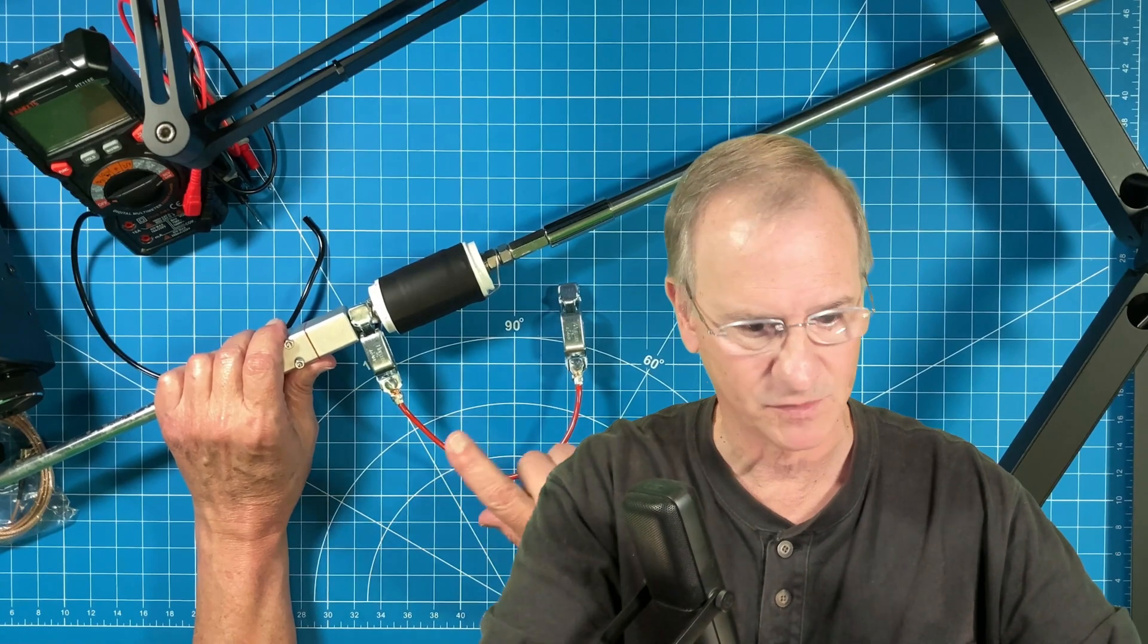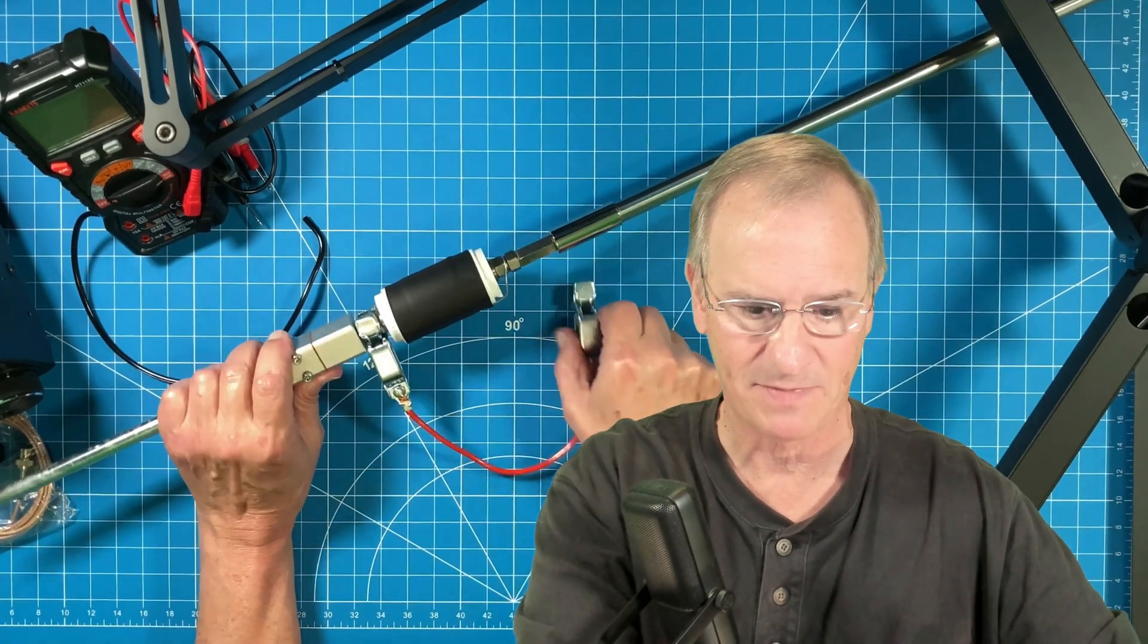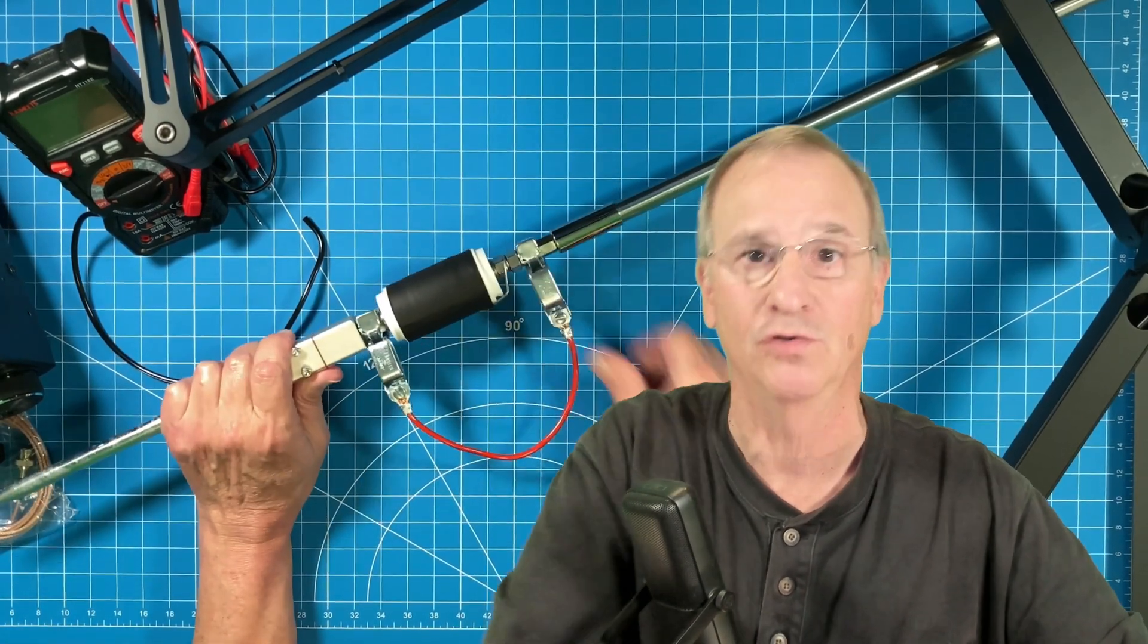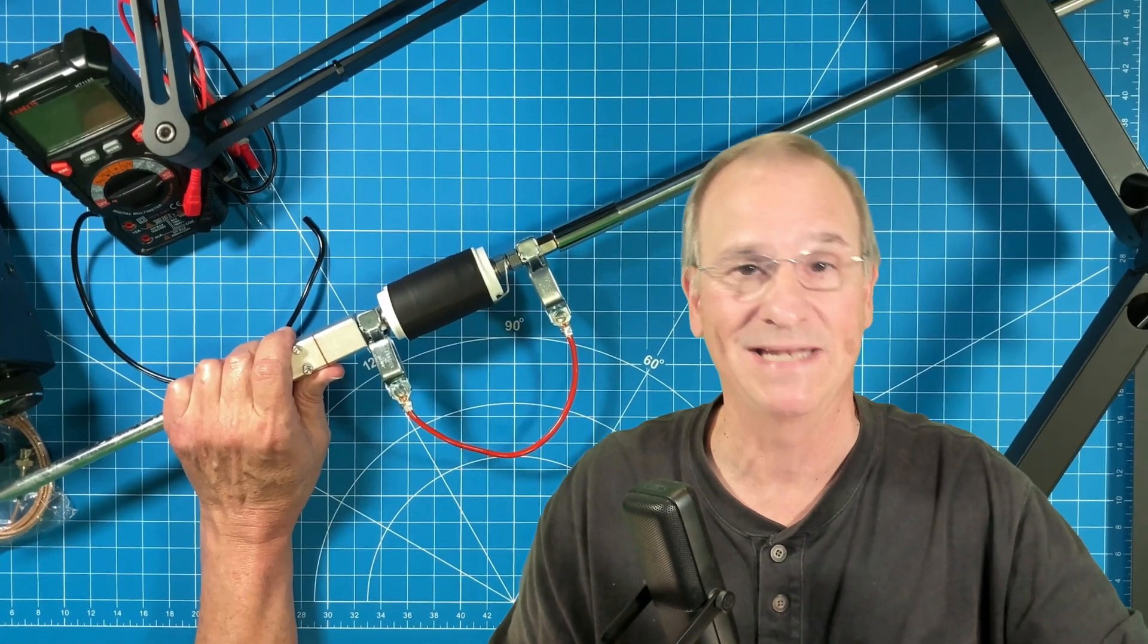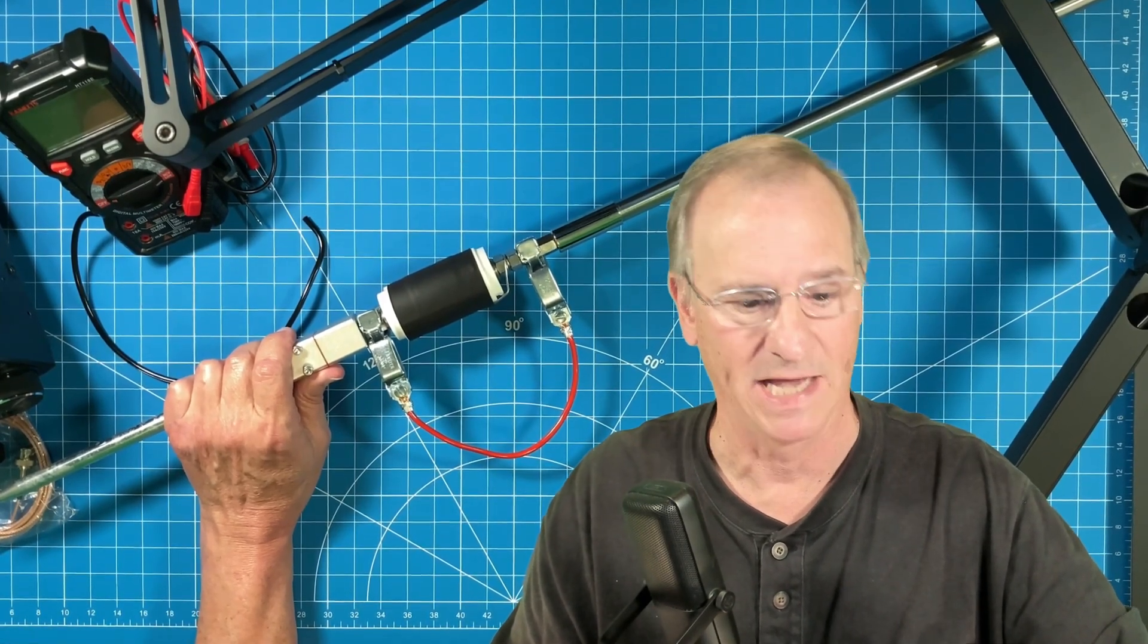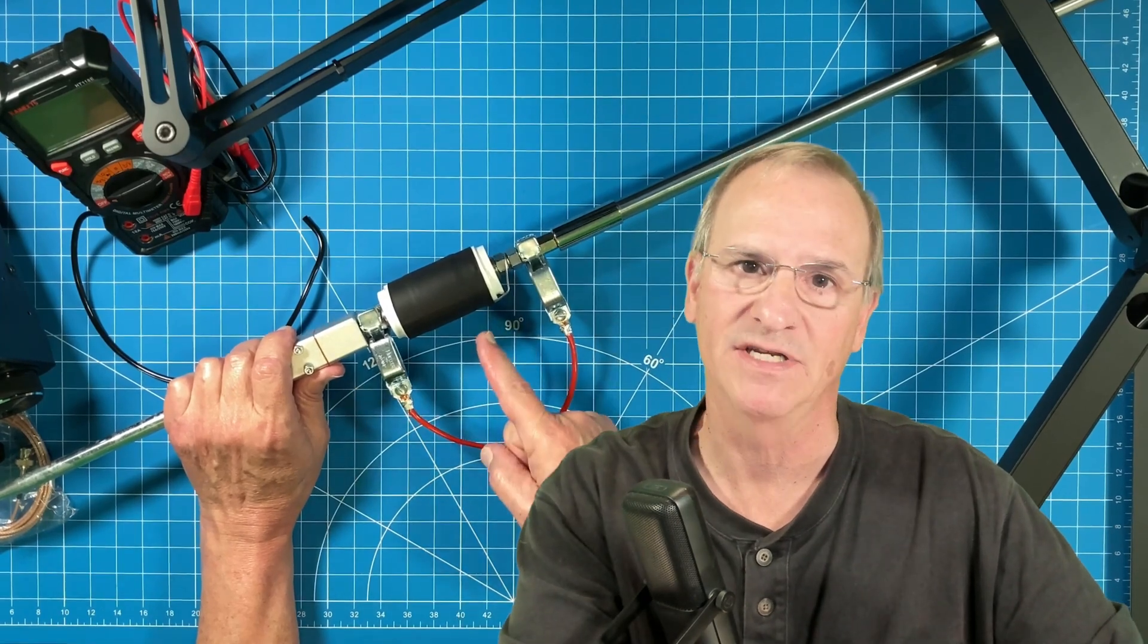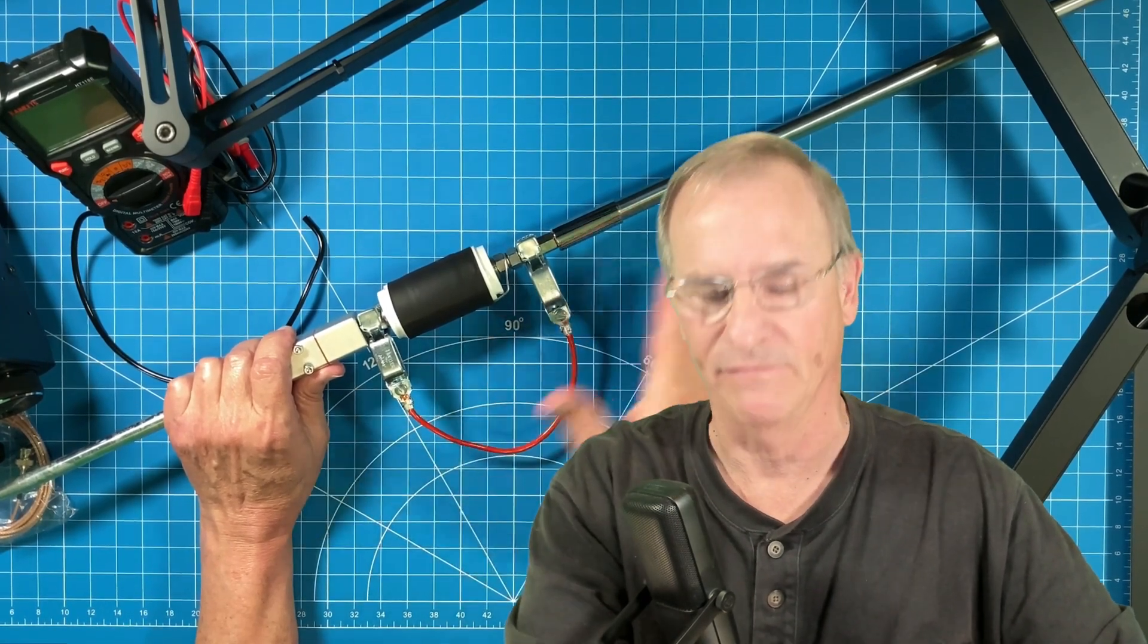And so what we have now is a Sporty 40, 40 meter setup that we can quickly convert over to 20 meters on up. Go all the way down to six meters if you like. It saves you the time of having to take the loaded coil out of your antenna system.